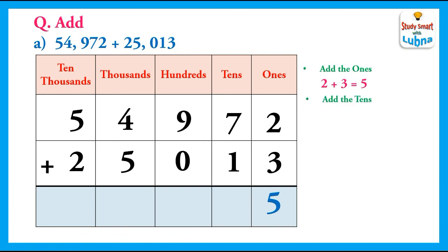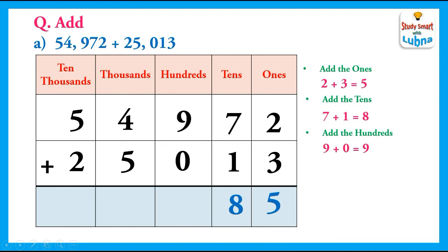Then we will add the tens. In the tens column we have digits 7 and 1, so we add them: 7 plus 1 equals 8. After this, we will add the digit at the hundreds column. In the hundreds column we have 9 and 0, so 9 plus 0 equals 9. After this, we will add the digits at the thousands column — we have 4 and 5.